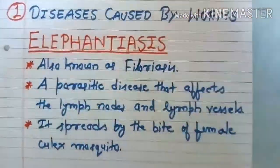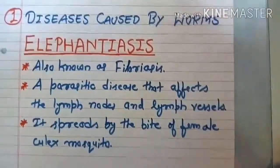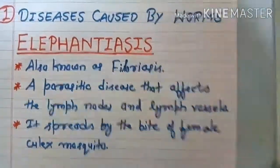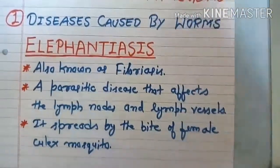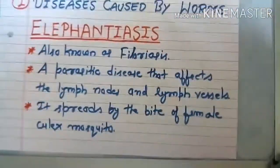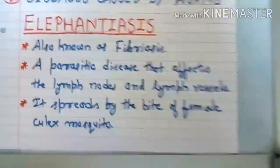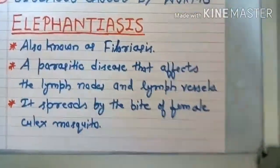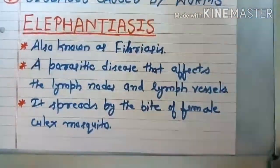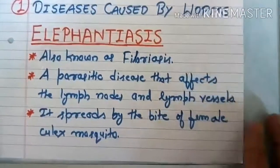Elephantiasis is a parasitic disease that affects the lymph nodes and lymph vessels. It is spread by the bite of the female Culex mosquito. The female Culex mosquito's bite is responsible for causing elephantiasis disease.